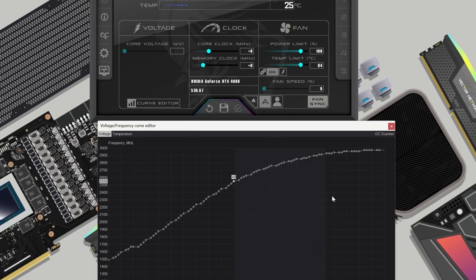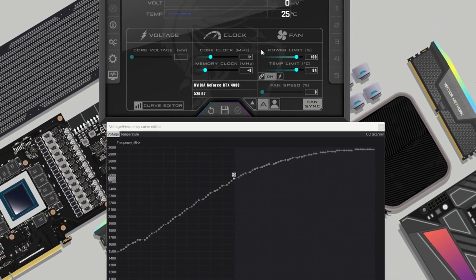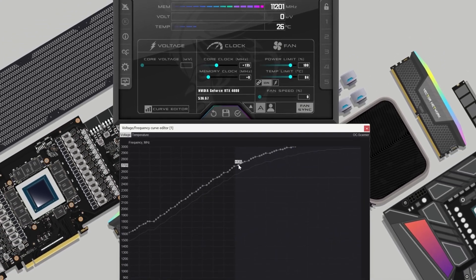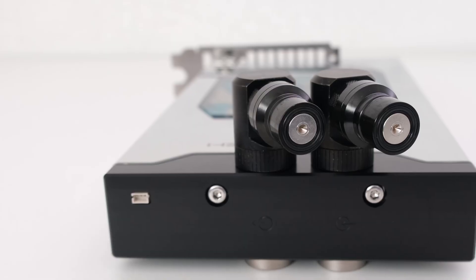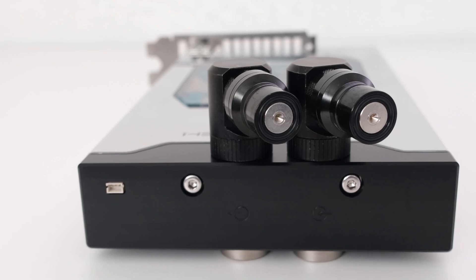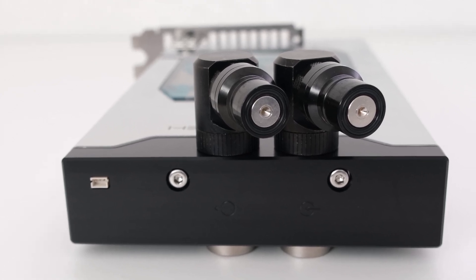Undervolting the card to 0.95 millivolts and adding 135 megahertz to the core to arrive at a targeted 2730 megahertz core clock, the GPU core and memory temperatures were 5 and 3 degrees Celsius lower compared to 100% power limit.